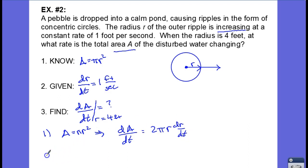And now step two, we're going to substitute. So substituting, we have dA dt evaluated at r equals four feet is equal to 2 pi times r times dr dt. And the r value is 4.